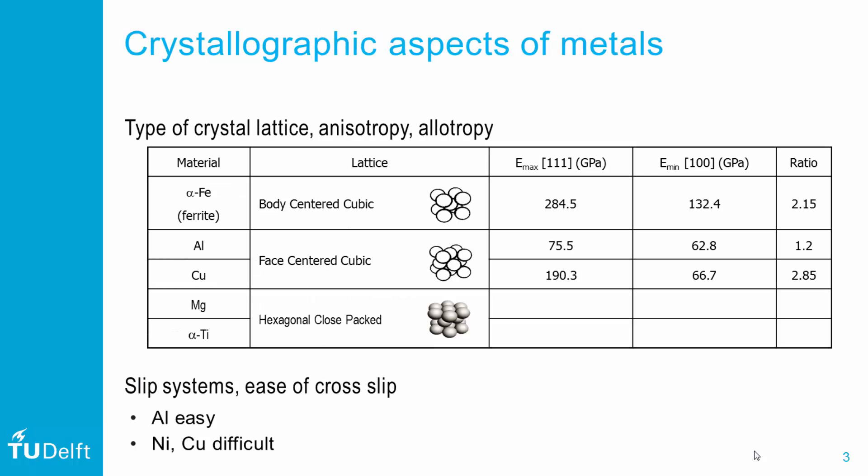Microcracks initially extend along slip bands, hence the crystallographic nature of the material will initially dominate the formation of microcracks. The crystallographic aspects considered here are the type of crystal lattice, elastic anisotropy, and allotropy.